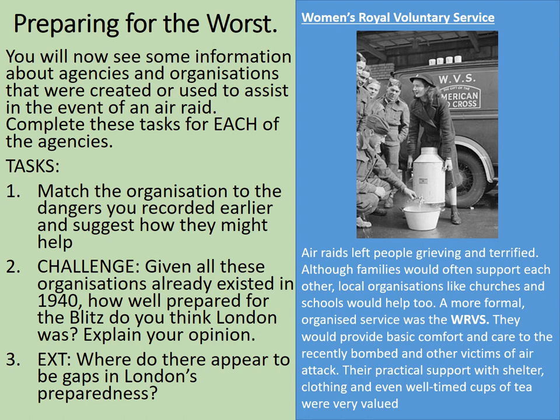The Women's Royal Voluntary Service was excellent for dealing with the immediate effects of panic and fear — a very reassuring presence. In terms of collapsed buildings and homelessness, they could help rehouse people or sort out temporary accommodation. Given that all these organisations existed before the Blitz even began, it shows London was actually quite well prepared. Nobody really knew what the effects were going to be, but many measures had been put in place requiring minimal adjustment once the raids started. One gap was shelters — how were they actually provided? That's something we'll focus on in a future lesson. Perhaps you identified other things; you could leave them in the comments below.